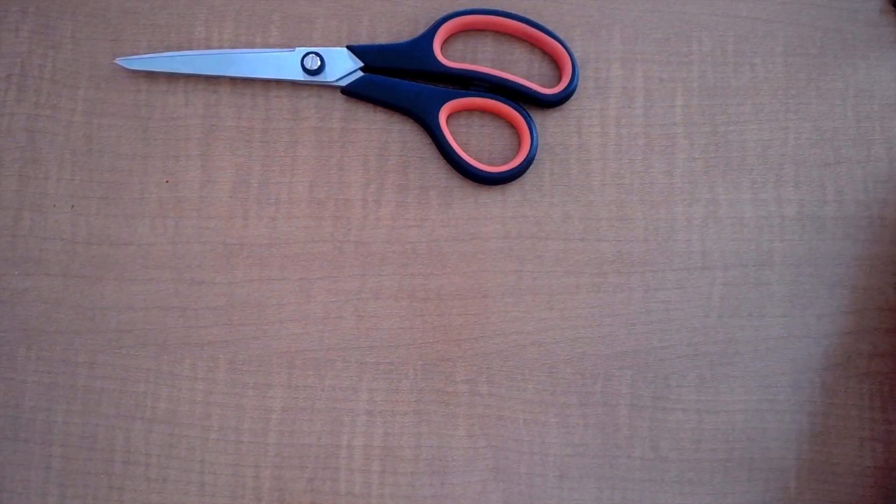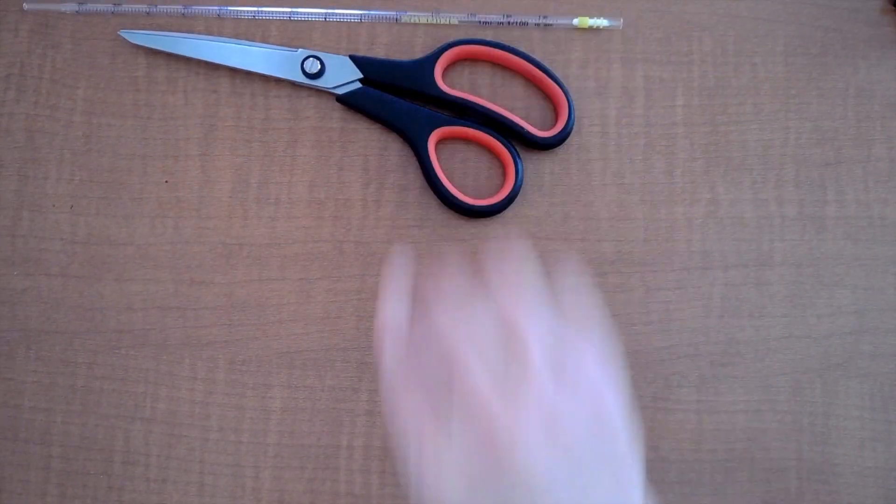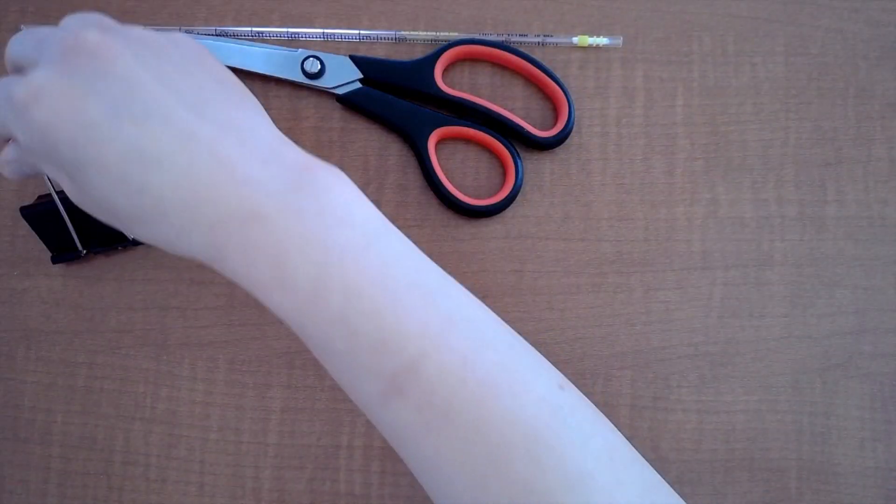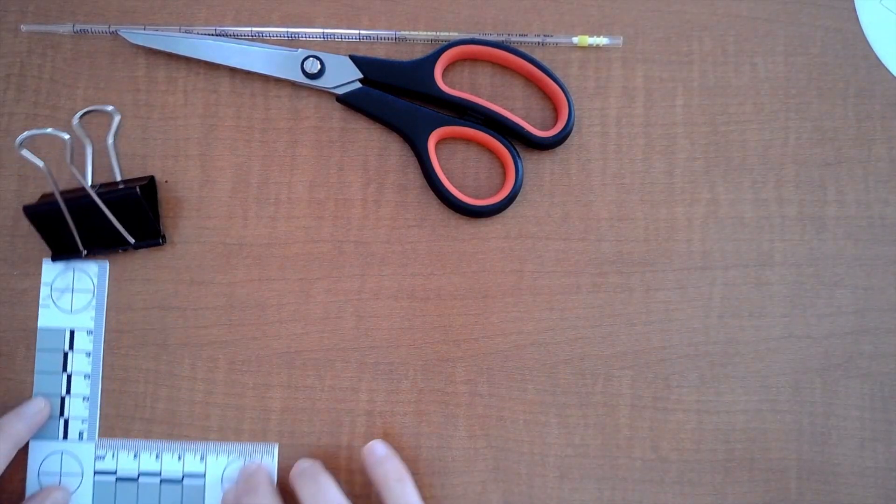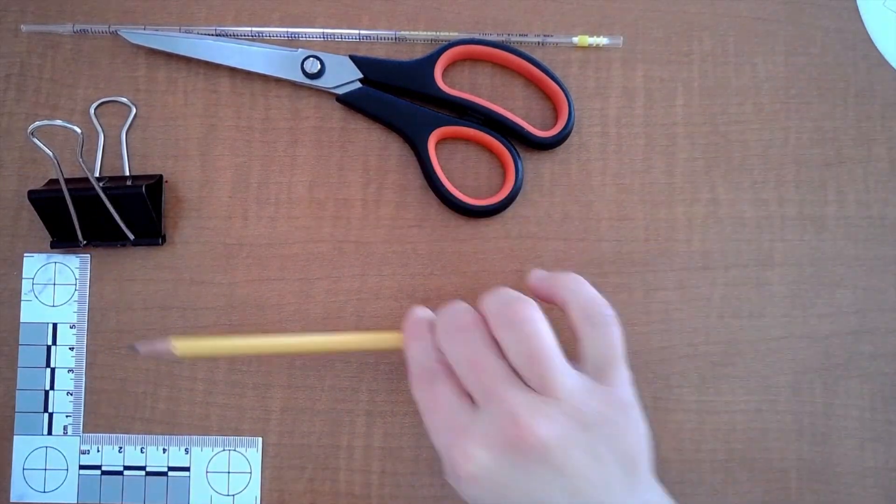We will need some scissors, a serological pipette, a large binder clip, your L-shaped ruler, and a pencil.